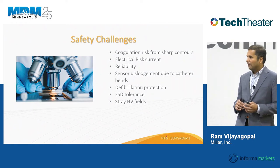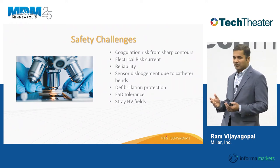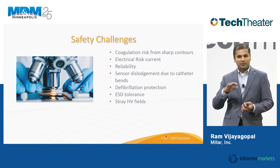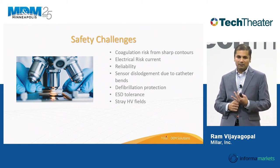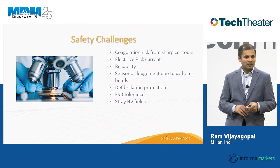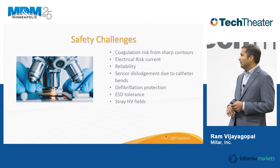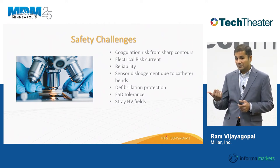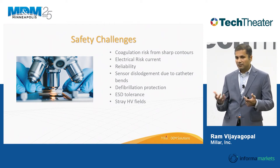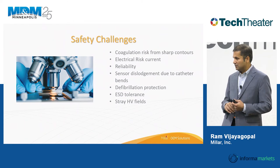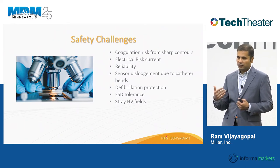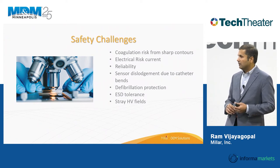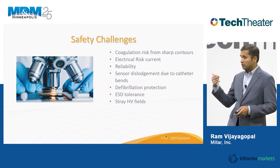Now for safety challenges. If the sensor will be blood-contacting, you want to avoid sharp contours that can cause pooling and risk of thrombosis. You also need to watch out for electrical risk current — most sensors use DC, but if you're using AC excitation, there can be capacitive transfer of current through tissue to earth ground, and there are standards governing this.